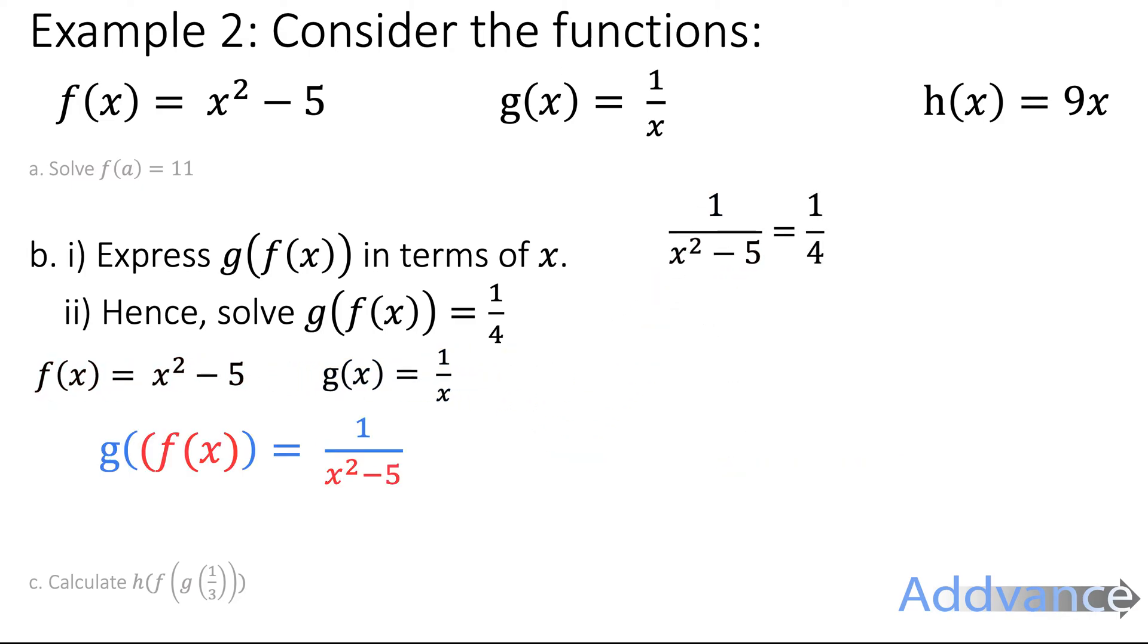Hence, we can solve when does this equal one quarter. So we make it equal to one quarter. And we're going to rearrange. We're going to get rid of the divide by 4 by times it by 4. So the quarter part there, it means divide by 4, we get rid of that. And we get rid of the divide by x squared minus 5 by multiplying by x squared minus 5. We get this.